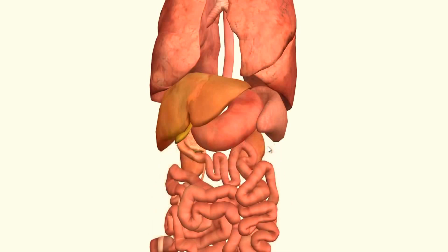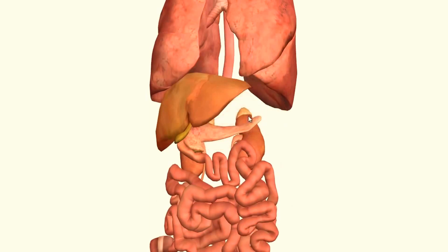Getting rid of the colon, you can see the stomach and the spleen sitting in front of the left kidney. And then you can see the tail of the pancreas sitting in front of it as well. The pancreas is a retroperitoneal structure, whereas the stomach and spleen are both intraperitoneal structures.